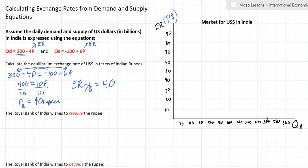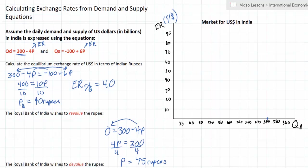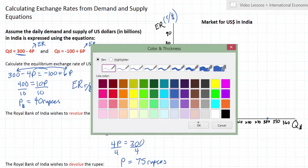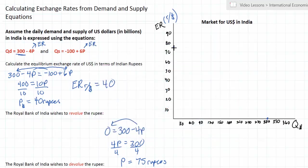We should also find the P intercept of demand — where our demand curve crosses the vertical price axis. To do that we set quantity demanded equal to 0 and solve for P: 0 equals 300 minus 4P, so 4P equals 300, and dividing both sides by 4 gives us a price of 75 rupees. I can put a point here representing the P intercept of demand, then connect these points to draw the demand curve.